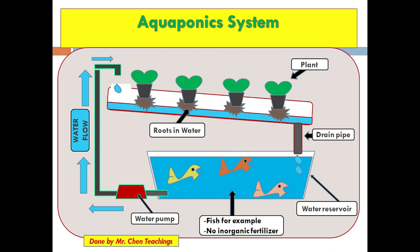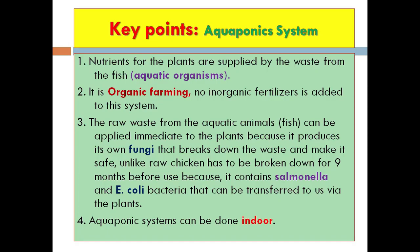Key points with the aquaponics system: number one, nutrients for the plants are supplied by the waste from the fish or aquatic animals; number two, it is organic farming — no inorganic fertilizers are added; number three, the raw waste from the aquatic animals can be applied immediately to the plants because it produces its own fungi that break down the waste and make it safe, unlike raw chicken manure which must be broken down for nine months before use because it contains Salmonella and E. coli bacteria.